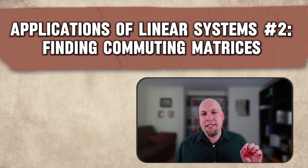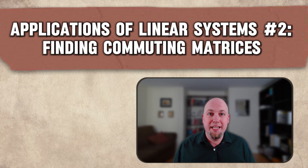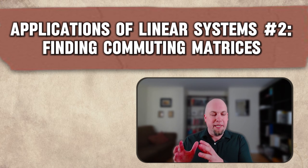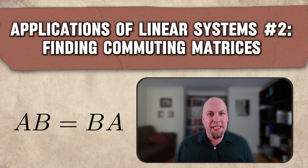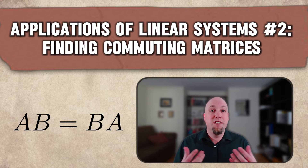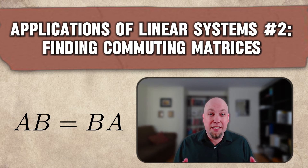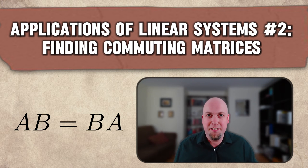What we're going to do today is look at the problem of: if I'm given a single matrix, how can I find all matrices that commute with it? In other words, if I'm given a matrix A, how can I find all matrices B with the property that A times B equals B times A? Remember, in general, matrix multiplication is not commutative, but it is true for some special matrices, and that's what we want to find. We're going to find it by setting this problem up as a linear system.